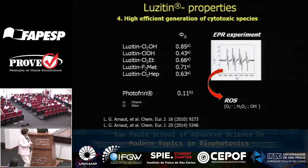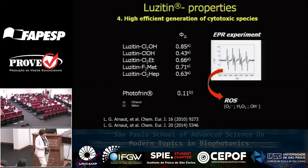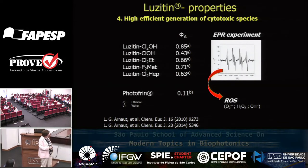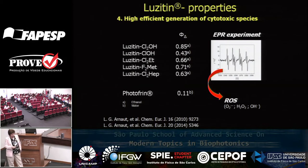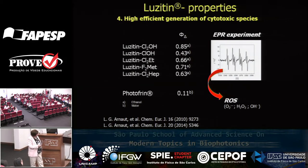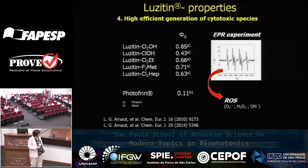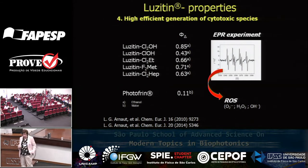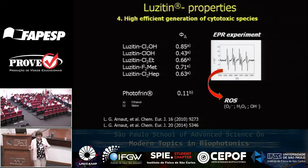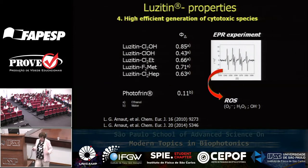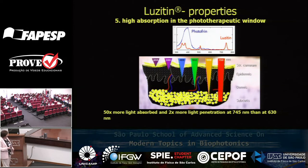We analyzed the photophysical properties in collaboration with Janusz in Poland and Luis Arnault in Coimbra — they did all the photophysical studies. Some compounds have good singlet oxygen formation, but it depends also on structure. Janusz also observed by EPR that there is some radical formation, meaning they can use both mechanisms for PDT — type 1 and type 2.